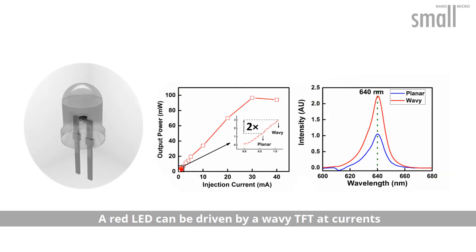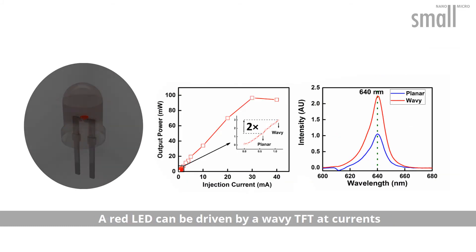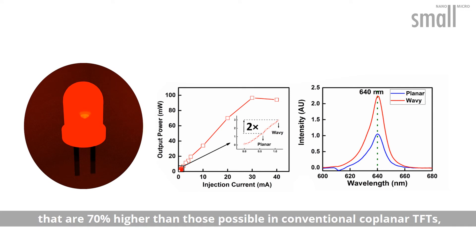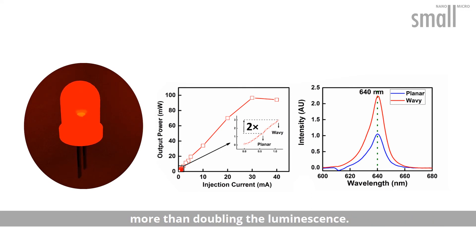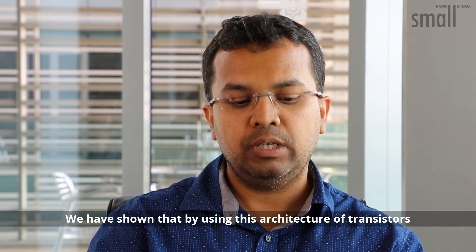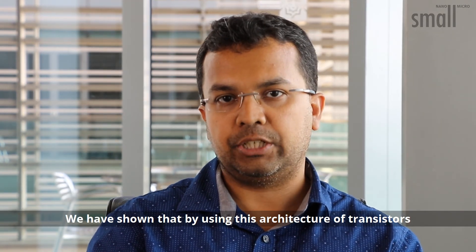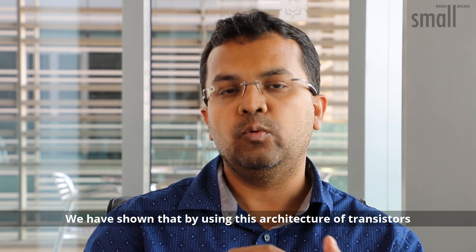Wavy devices exhibit a 70% higher drain current that only decreases by 10% for a bending radius of 0.5 cm. A red LED can be driven by a wavy TFT at currents that are 70% higher than those possible in conventional coplanar TFTs, more than doubling the luminescence.